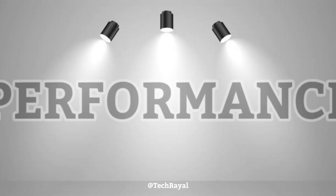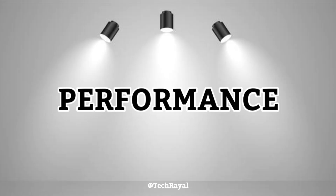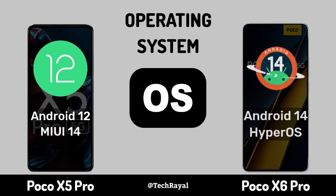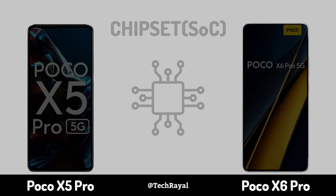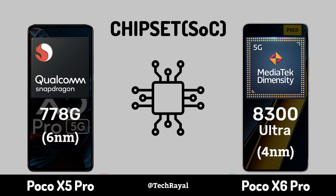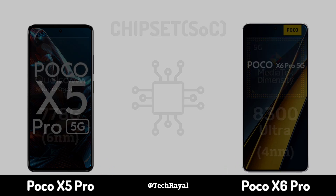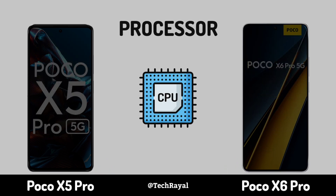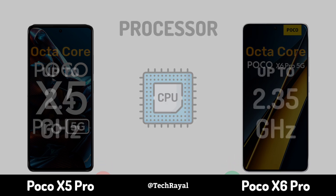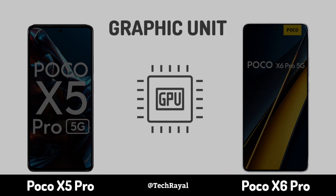Now, Core Performance: Operating System. Chipset. Processor. Graphic Unit.